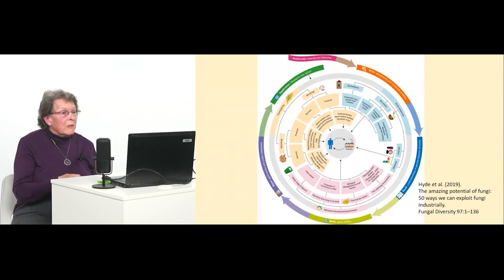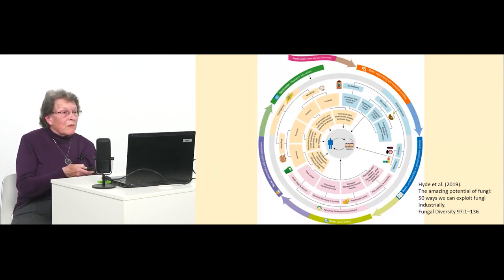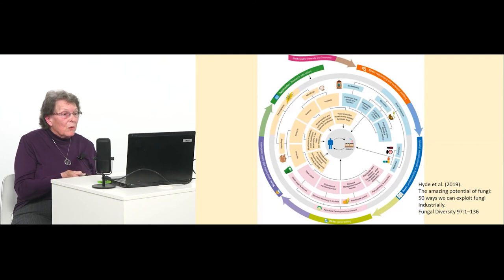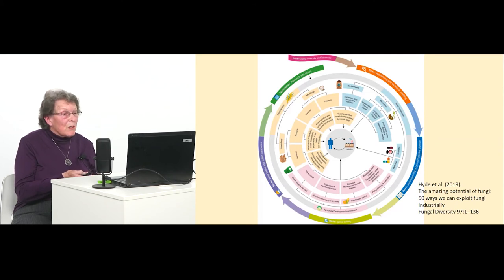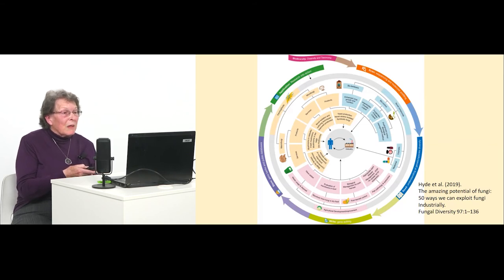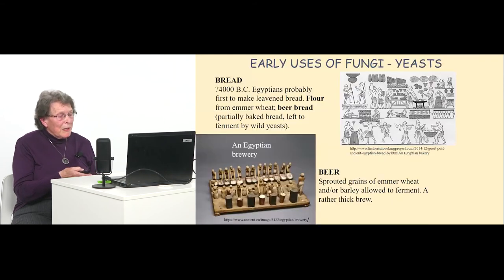This paper by Kevin Hyde and others looks at fungal diversity and the diversity feeds into 50 different uses to which fungi can be put industrially. Fungi have been used for about 6,000 years — one of the earliest uses was probably by the Egyptians making leavened bread: they ground emmer wheat, baked it partially, left it to ferment with wild yeasts, and those wild yeasts caused the bread to rise.